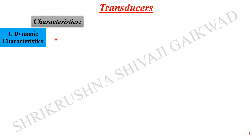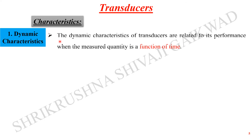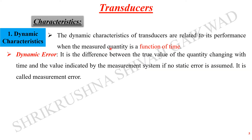Now let's talk about the dynamic characteristics of the transducer — the second type of characteristic. The dynamic characteristics of a transducer relate to its performance when the measured quantity is a function of time. Over a period of time, the measured quantity changes, and this leads to the dynamic characteristics of the instrument that defines the performance of the system.